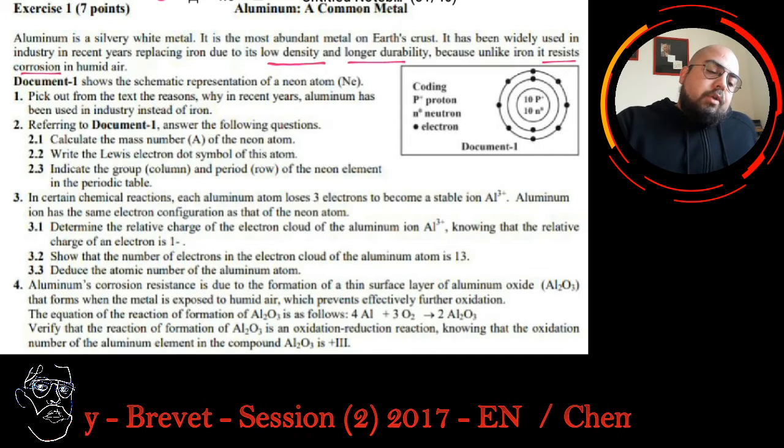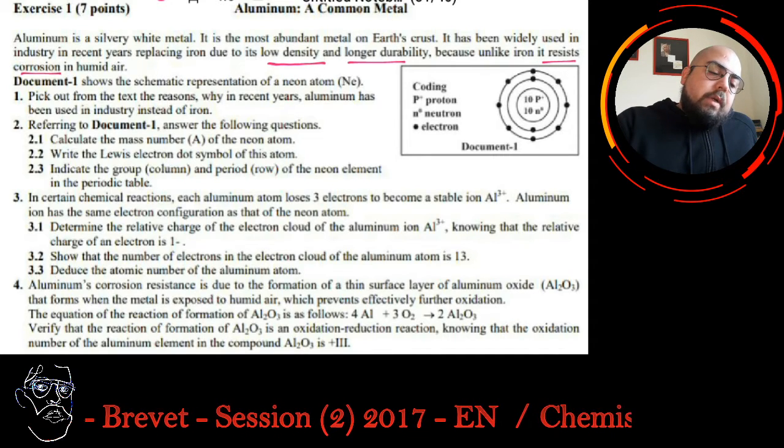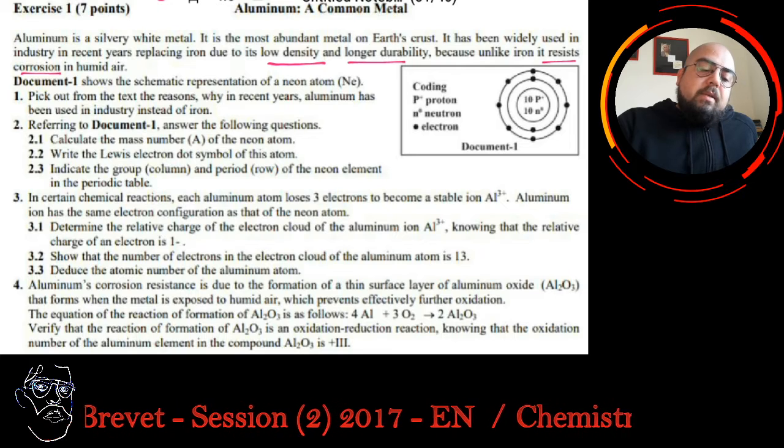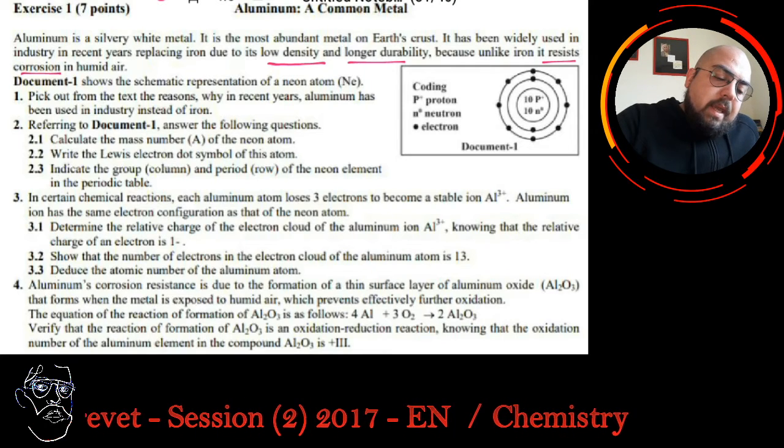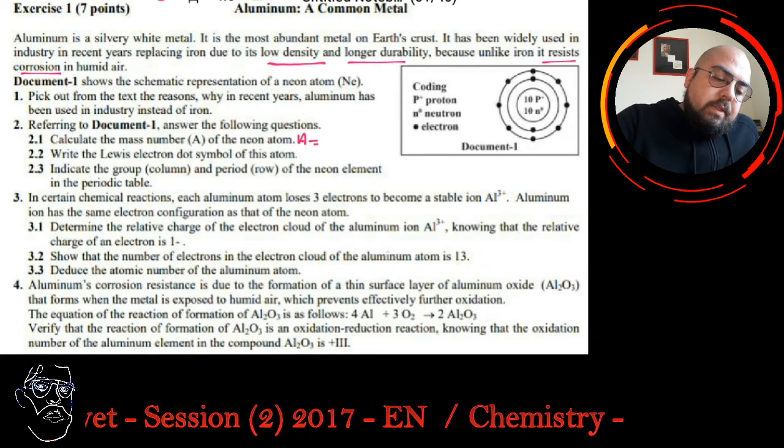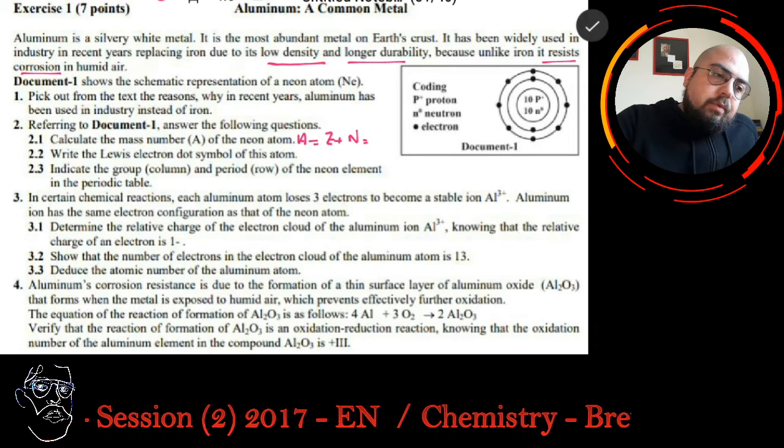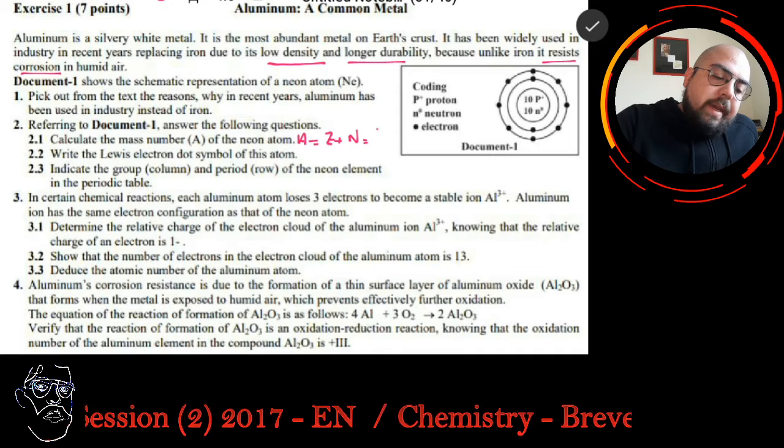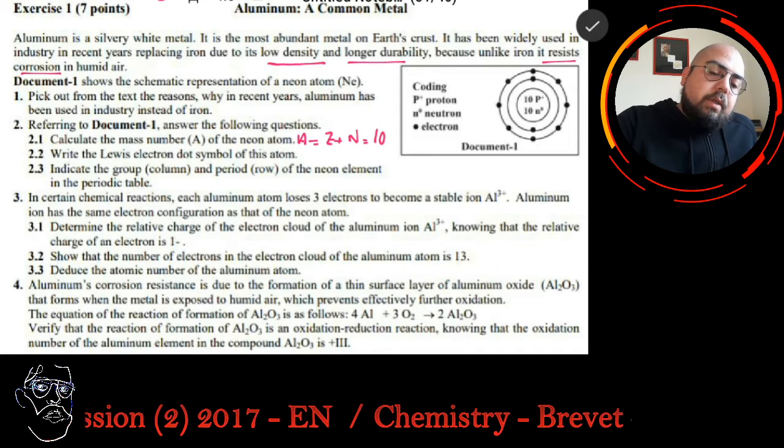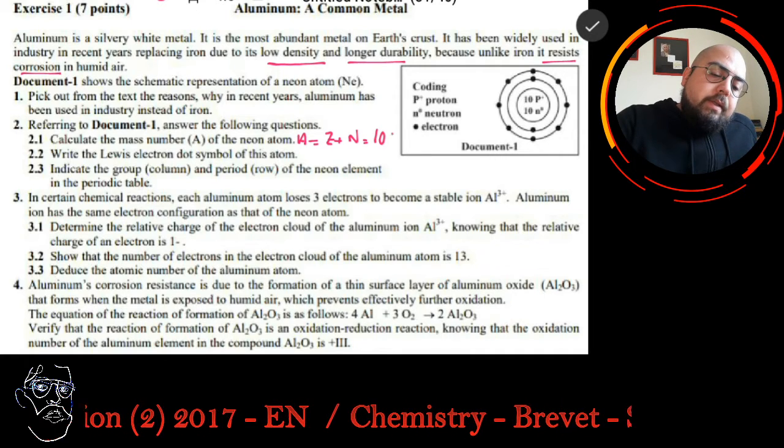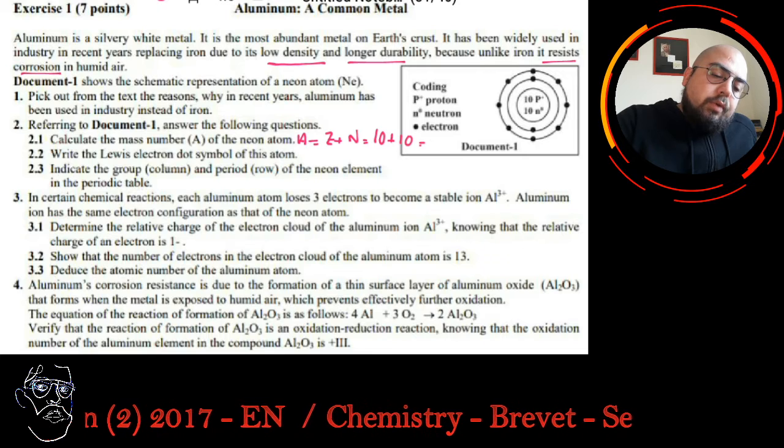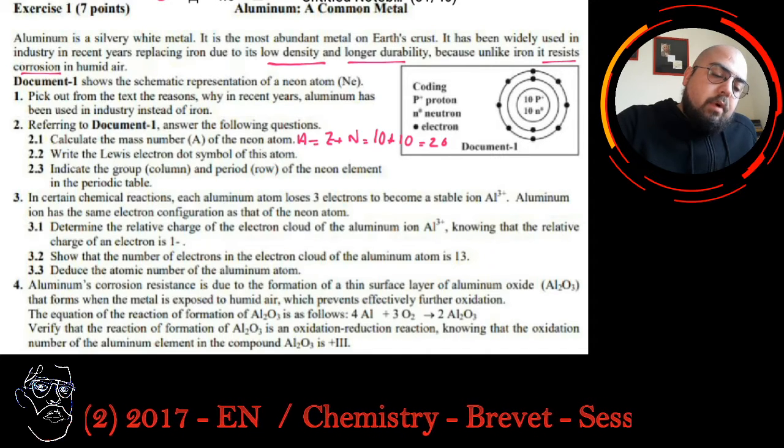Referring to document 1, answer the following question. Calculate the mass number of the neon atom. The mass number is A, which is Z plus N. Z is equal to 10, because we have 10 protons regarding document 1, and 10 neutrons, so the total will be 20. This is for part A.